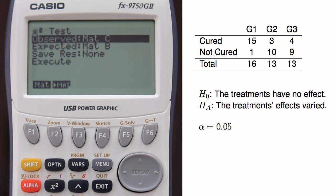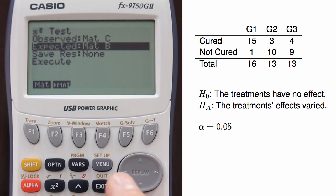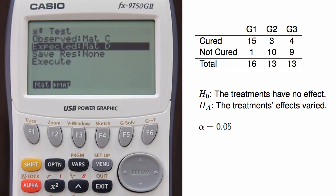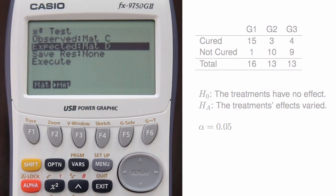Finally, specify where the matrix of expected values should be stored. This matrix will be helpful since it shows the expected counts of each cell in the matrix after we run the test. And to actually run the test, we can hit execute.